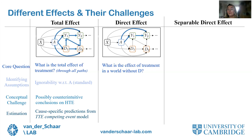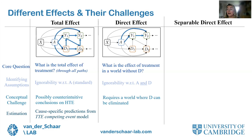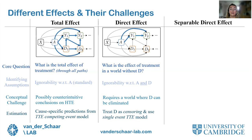The total effect can be estimated through cause-specific predictions from time-to-event competing events models in a T-learner fashion. A different type of effect is the direct effect, which answers: what is the effect of treatment in a world where competing events simply don't occur? This requires strict identifying assumptions and has a strong conceptual challenge — it requires imagining a world where competing events like cardiovascular events do not exist.